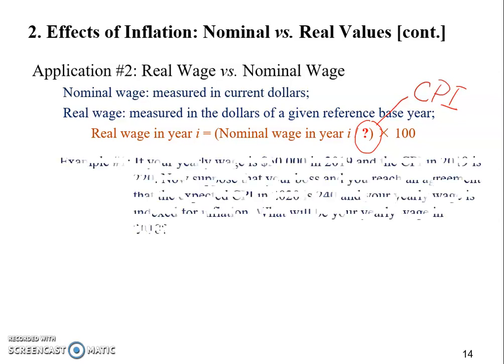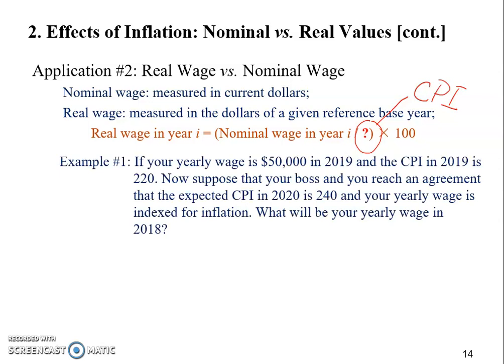Let me give you a real-world example with made-up numbers. In this case, your yearly wage is $50,000 in 2019, and the CPI in 2019 is 220. Now suppose your boss and you reach an agreement that the expected CPI in 2020 is going to be 240, and your yearly wage is indexed for inflation. What will be your yearly wage in 2020?